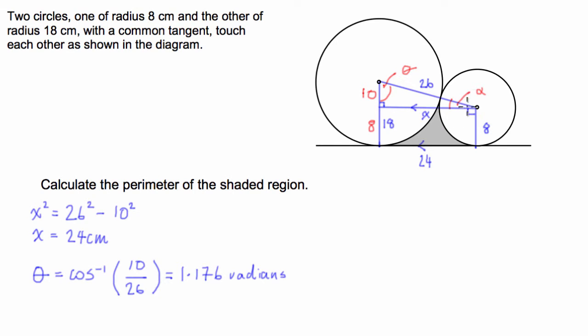So alpha is going to equal 180 take theta, take 90 degrees. So let's write that down. So alpha is equal to, now this is all in radians though, so 180 degrees in radians is going to be pi minus pi over 2, which is 90 degrees, minus theta, which is 1.176. And that gives us an angle of 0.395 radians. Perfect.